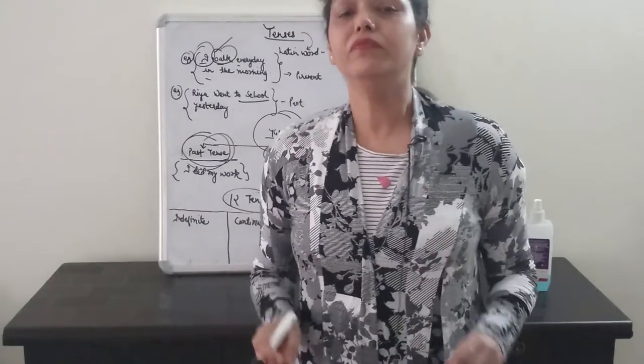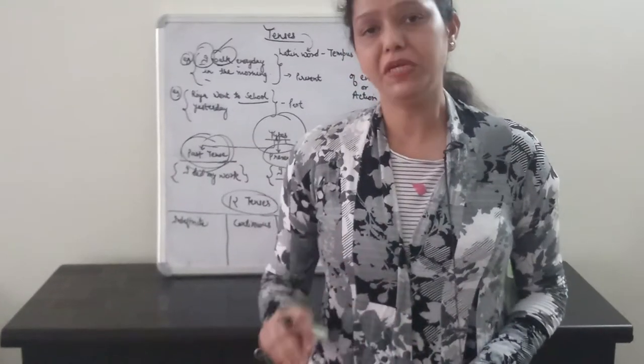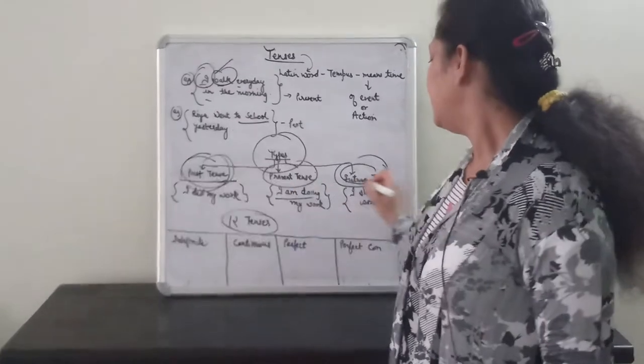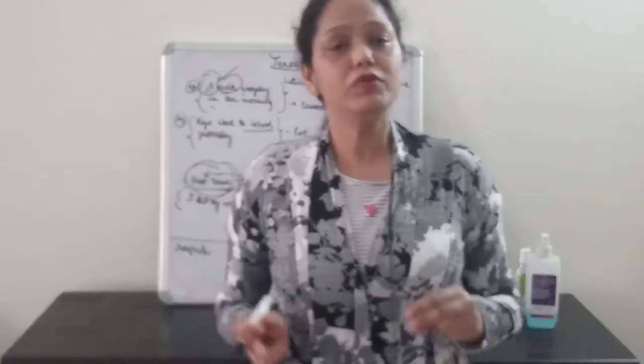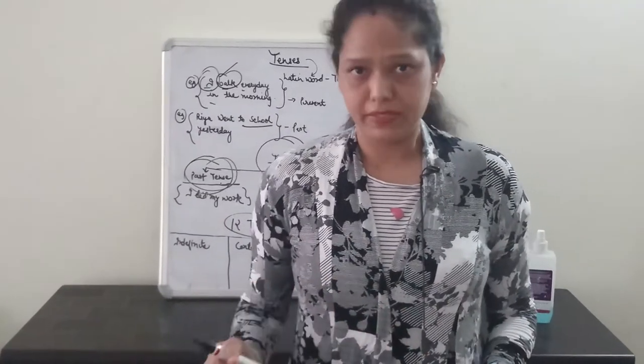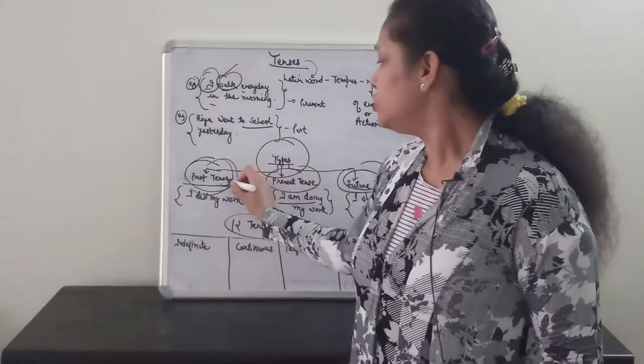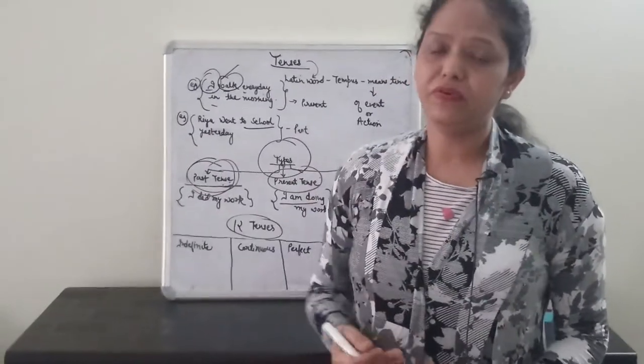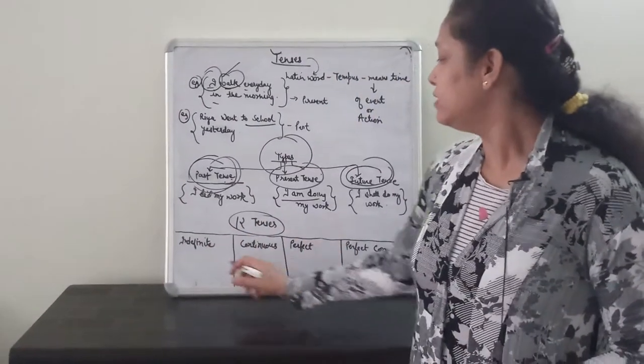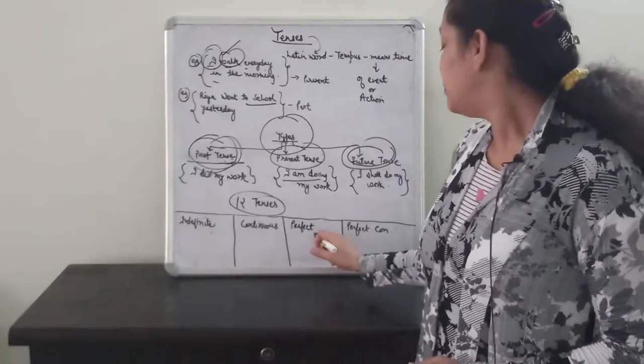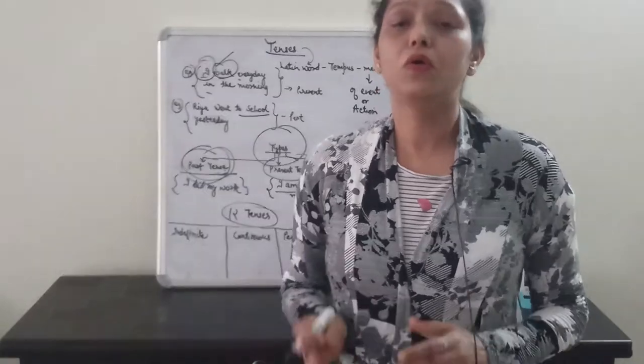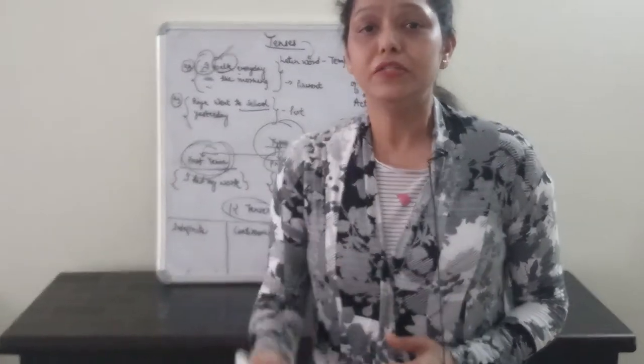Overall, we can see that there are three major types of tenses: present tense, past tense and future tense. When we talk about tenses overall, there are 12 types of tenses because each of these tenses are further classified into other kinds. We can see here that indefinite, continuous, perfect and perfect continuous. It is depending on the duration of time.